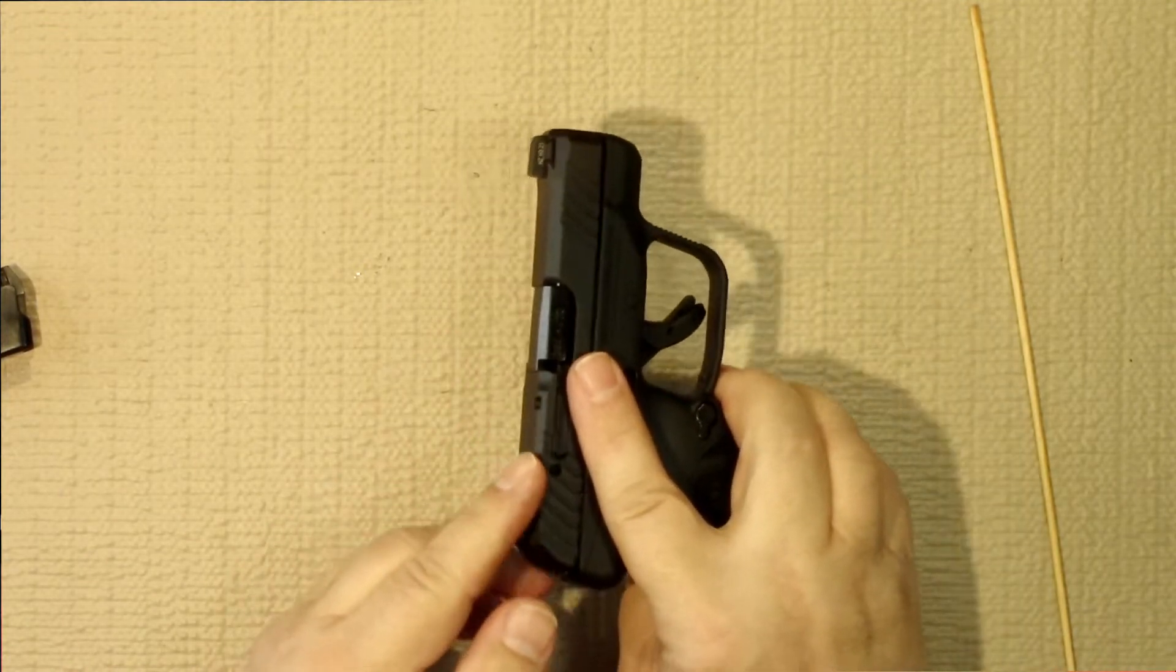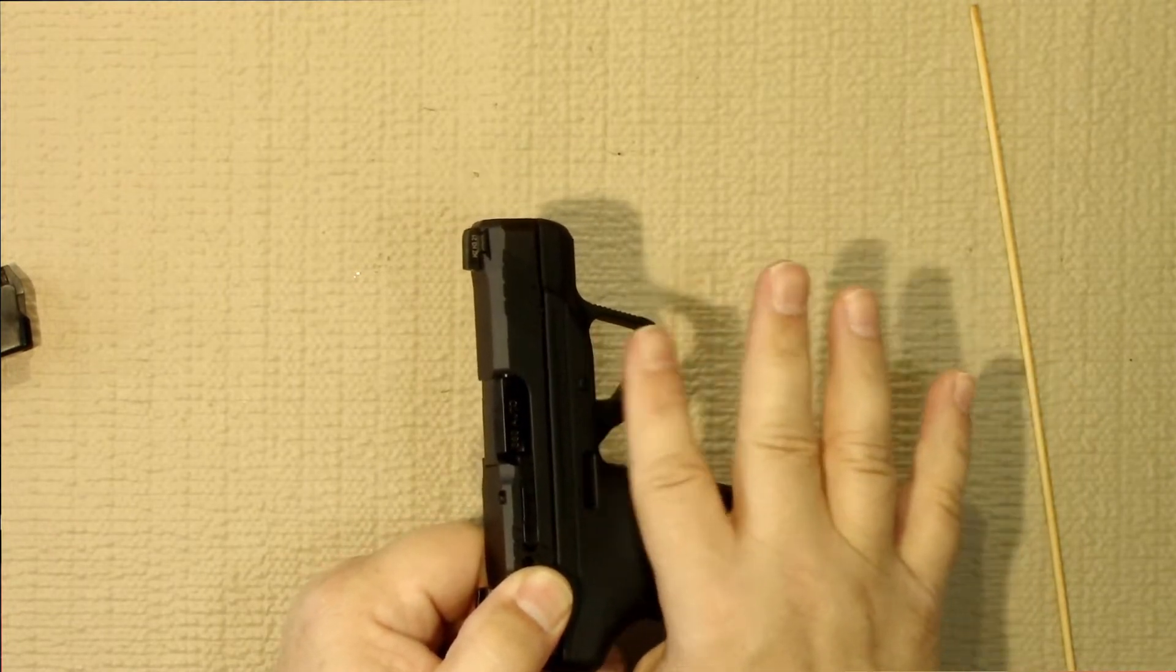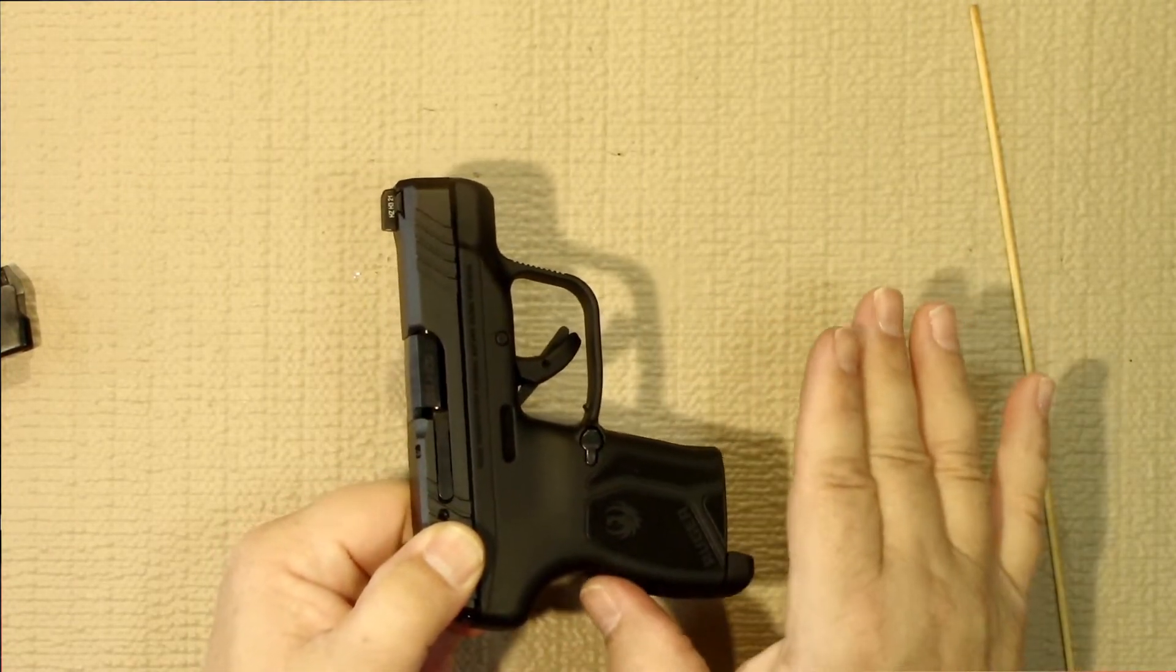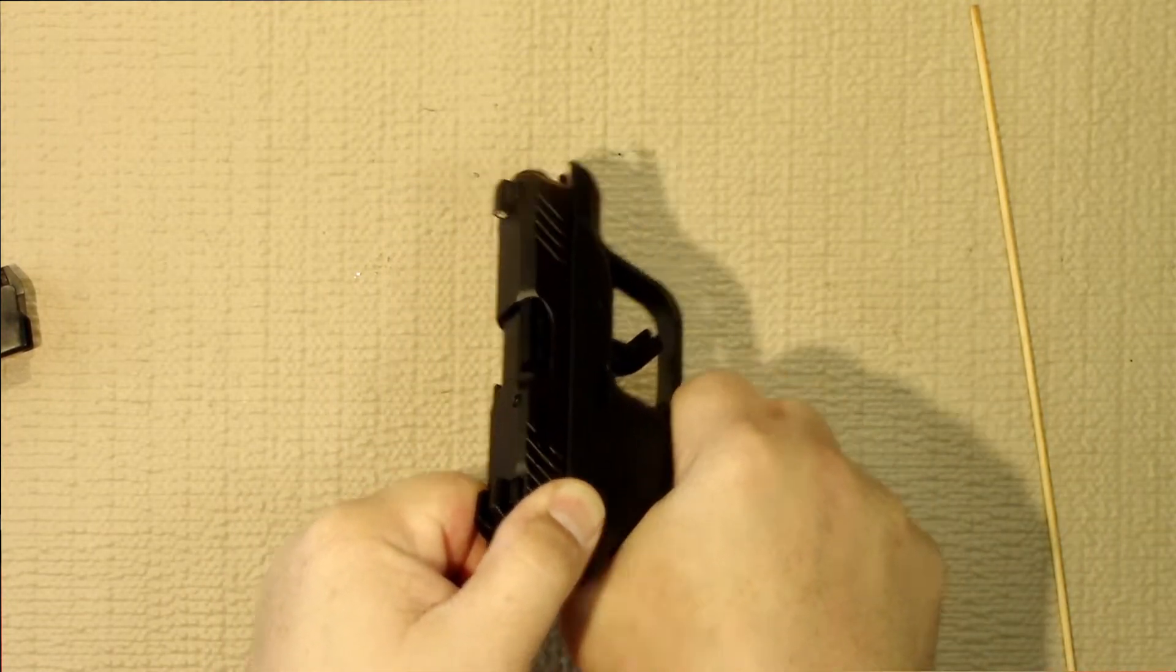Then you would need to open up the slide to get a good look at the chamber. Always make sure you keep your finger out of the trigger well. The Ruger LCP Max will fire with the magazine removed, so pull the slide back to ensure the chamber area is free and clear.